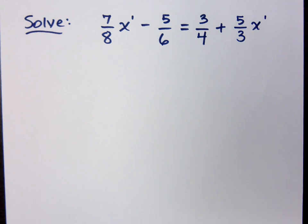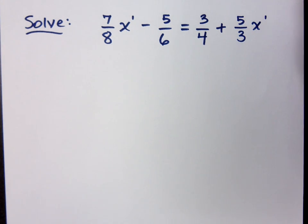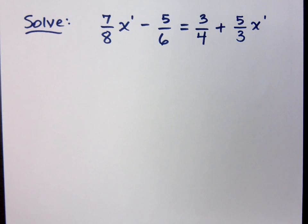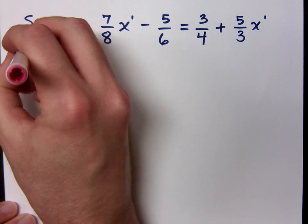Now you could do what we did before — get all of the x's on one side and constants on the other — but you could do something that will help you out first. What is that? Get rid of the fractions. When we got rid of the fractions back in the day, we had to find and identify the LCD. So what is the LCD in this problem?